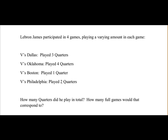But how might we represent that mathematically? So if we were to write it out, 3 quarters of a game is 3 over 4. The second game he played 4 quarters, that's 4 over 4. The third one is 1 over 4 and the last one is 2 quarters, that's 2 over 4.